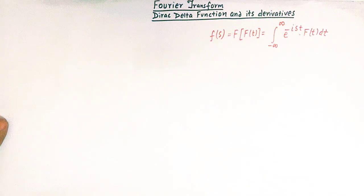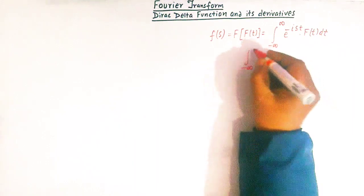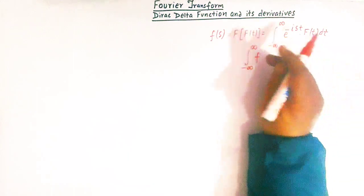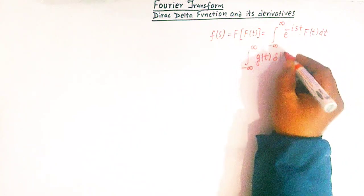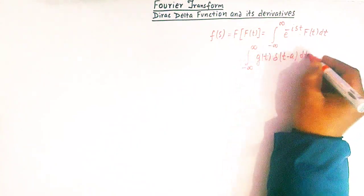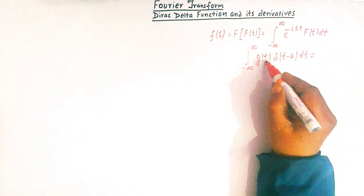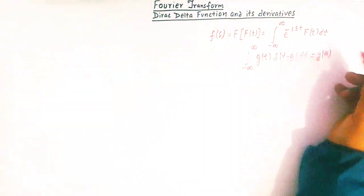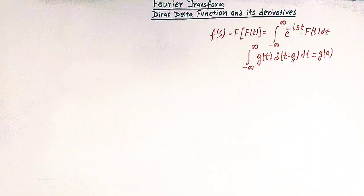Now let us consider the definition of the Dirac delta function in terms of an integral. We know that the integral from minus infinity to infinity of g of t times delta of t minus a dt is equal to the value of the function g of t at the point a, that is g of a. So the delta function may be defined like this.